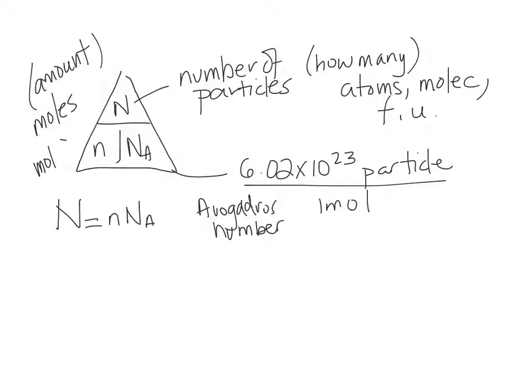So the way the magic triangle works is you cover up what you're looking for. If I'm asked what is the number of molecules, you would have to cover up the big N. The two letters that remain will be your formula. If I'm asked what is the amount, I'm looking for the number of moles, I cover up moles. My formula would be big N over NA.